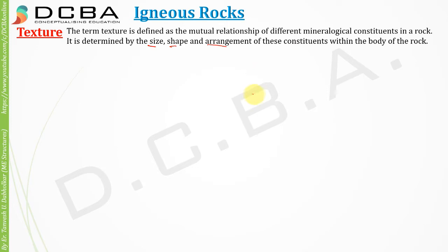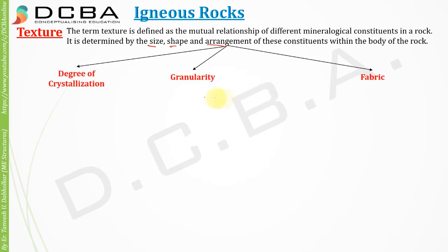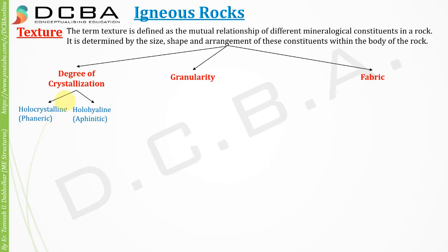Texture is divided into three types: degree of crystallization, granularity, and fabric. Degree of crystallization is bifurcated into two types. First is hollocrystalline, and rocks with this kind of crystallization are called phenolic rocks. Second is hollohaline, and these rocks are called aphanitic.